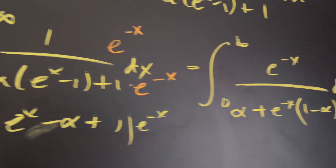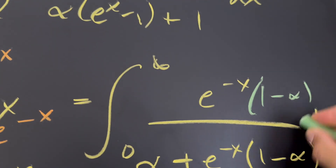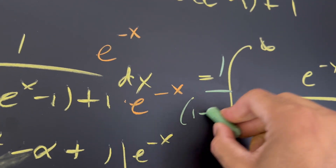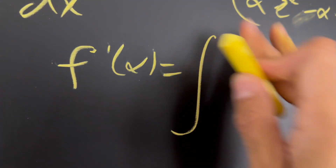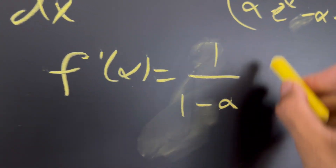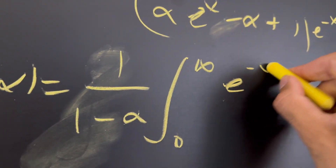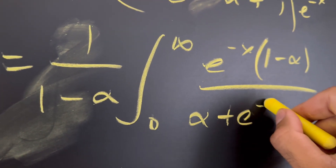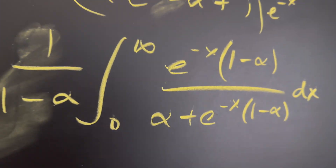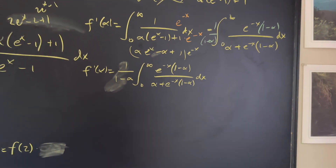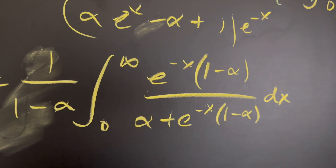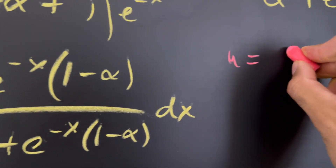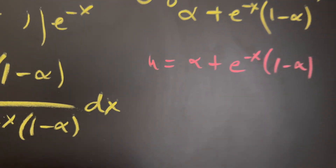Now I'm going to introduce a (one minus α) on the top and a one over (one minus α) on the outside — because those two cancel, preserving the function. So f'(α) equals one over (one minus α) times the integral from zero to infinity of e^(−x) times (one minus α) over (α + e^(−x) times (one minus α)) dx.